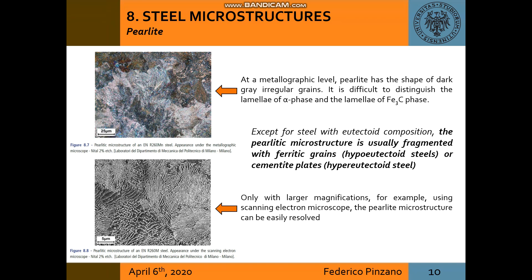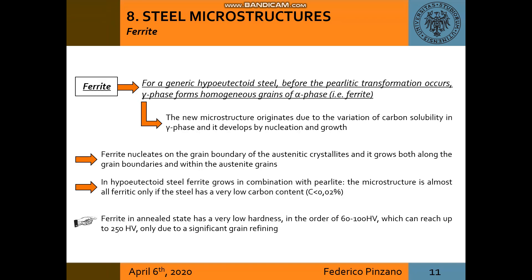The pearlitic microstructure is usually fragmented with ferritic grains or cementite plates in hyper-eutectoid steel. For a generic hypo-eutectoid steel, before the pearlitic transformation occurs, the gamma phase forms homogeneous grains of alpha phase — ferrite. Ferrite nucleates on the grain boundaries of the austenitic crystals and grows both along the grain boundaries and within the austenite grains. In hypo-eutectoid steel, ferrite grows in combination with pearlite and has a very low carbon content, lower than 0.02%.